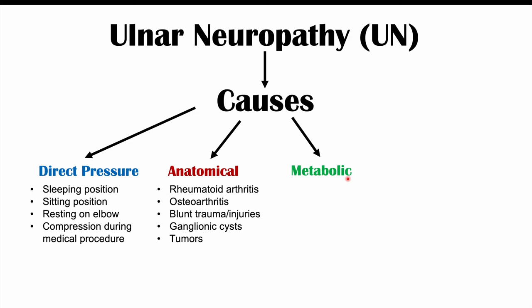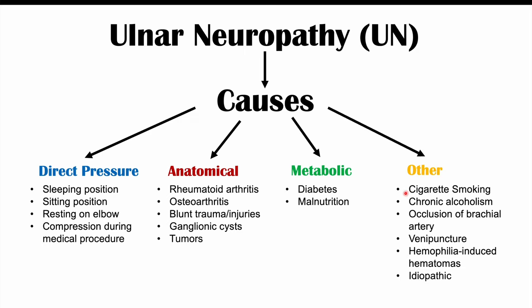Other causes include cigarette smoking, chronic alcoholism, occlusion of the brachial artery — which reduces blood supply to the nerves — venipuncture near the ulnar groove or cubital tunnel, and hemophilia-induced hematomas that can impinge on the nerve. Idiopathic causes, not entirely understood, are also possible.